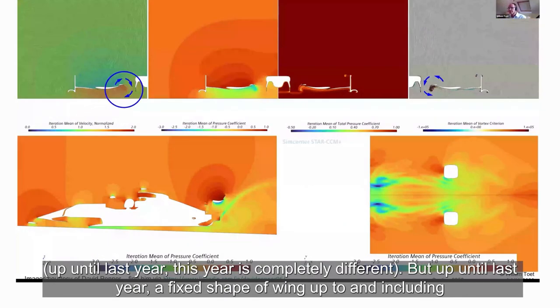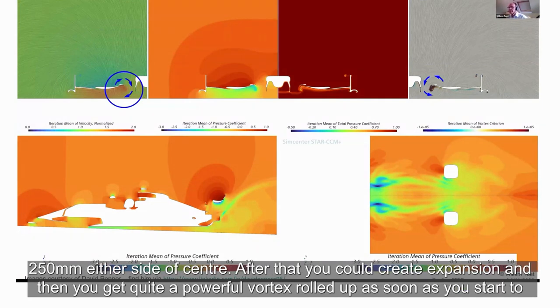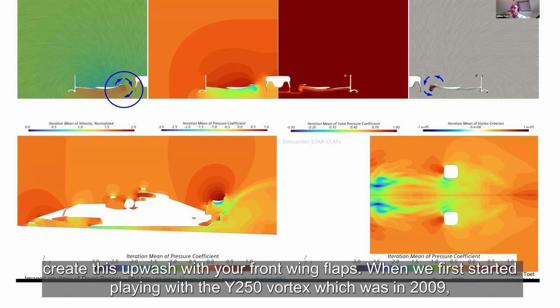This year is completely different, but up until last year you had a fixed shape of wing up to and including 250 millimeters either side of center. After that you could create expansion and then you get quite a powerful vortex rolled up as soon as you start to create this upwash with your front wing flaps.